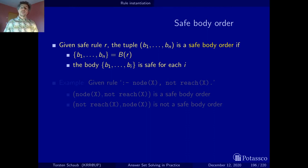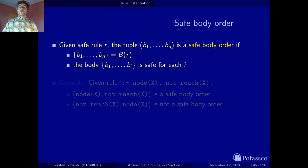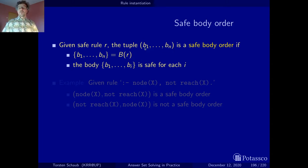Mathematically, this is captured as follows. We start from a body where b1 to bn are its body literals — positive, negative, comparisons. We put them in order so that each prefix of this order is itself safe. That is, whenever we take a prefix from b1 to bi, this prefix has to be safe as well. Grounding proceeds along such a safe body order, starting with the very first — necessarily positive — body literal, instantiating it, binding the variables, and then continuing from left to right.